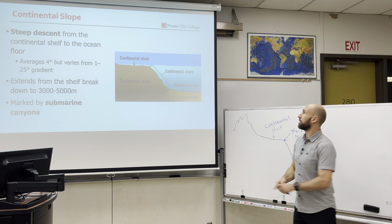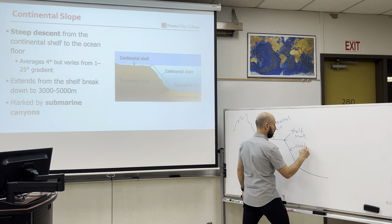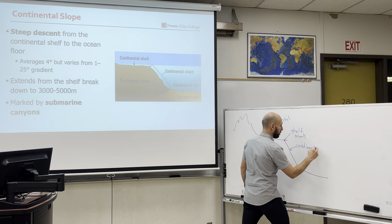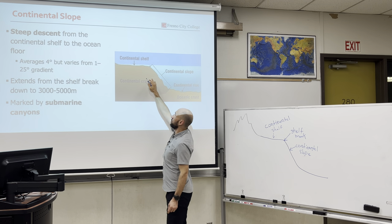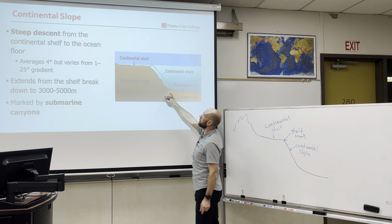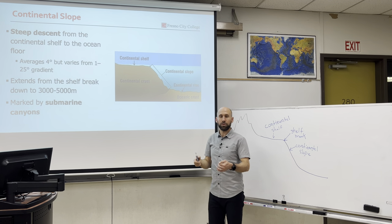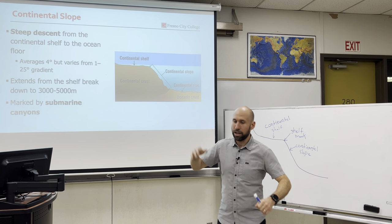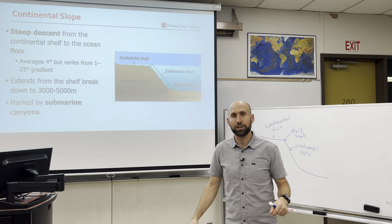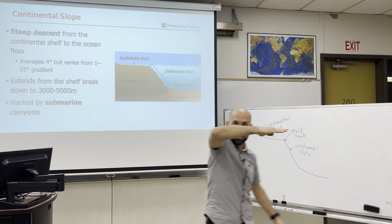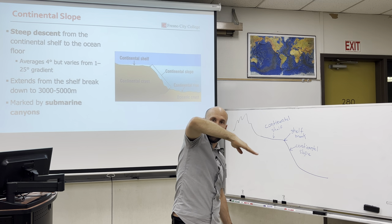The continental slope is a steep descent from the continental shelf right past the shelf break. It extends from the shelf break down to depths of about 3,000 to 5,000 meters. The average is about 4 degrees of slope, but it can vary anywhere between 1 to 25 degrees. The continental shelf is really flat, and then the continental slope increases the angle.